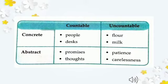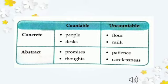Abstract nouns are those which cannot be seen or touched. Number one: promises (وعدے) — we can say 'he made one promise' or 'two promises,' so we can count them, but we cannot see or touch them — so they are abstract countable nouns. Thoughts (خیالات) — we can count thoughts, so abstract countable. Patience (صبر) — we cannot count it exactly, so it is abstract uncountable. Carelessness (لاپرواہی) — we cannot give an exact count, so it is abstract uncountable.